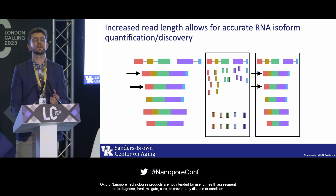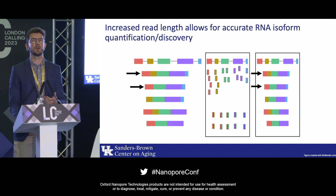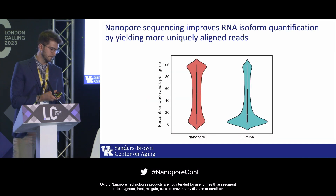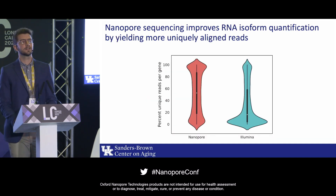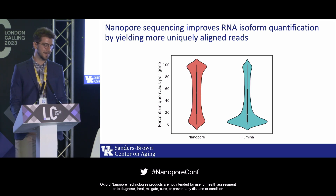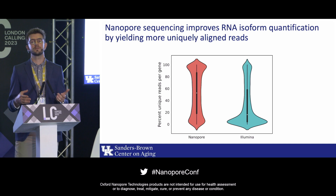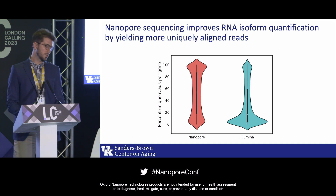Here's some data comparing Illumina and Nanopore sequencing for reads that uniquely align to a specific RNA isoform. On the y-axis we have percent reads that uniquely align to a transcript, and on the x-axis we have Nanopore and Illumina. For Nanopore, the median value was 50%, meaning on average 50% of reads are uniquely aligned to a transcript, whereas for Illumina the median was 19%.